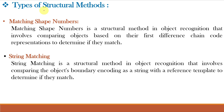Just as decision theoretic methods are of three different types, similarly structural methods are of two different types: matching shape numbers and string matching. Matching shape numbers is a structural method in object recognition that involves comparing objects based on their first difference chain code representations to determine if they match. We compare the shape number of the object in our database — the template — to the object in our image based on the first difference chain code, and if they match, the object is recognized. String matching is a structural method that involves comparing the object's boundary encoding as a string with a reference template to determine if they match, and hence we do the object recognition.